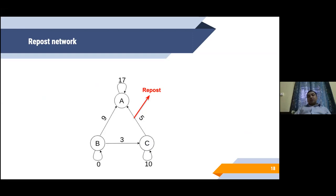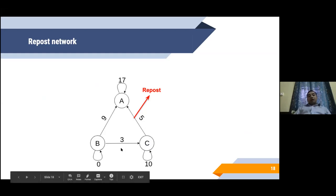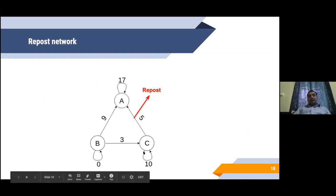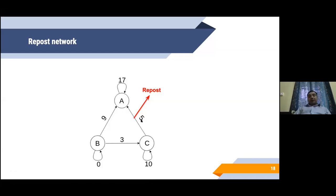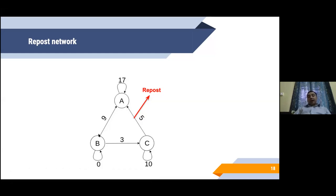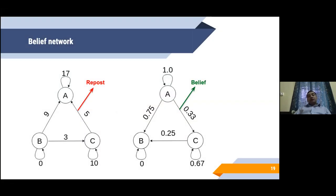From this we construct a repost network. What is a repost network? Let us assume we have a small set of users A, B, and C. Let's consider node C. Node C posts 10 posts of its own, that is denoted by this self loop, and it reposts 5 posts from user A. That is denoted by the directed edge. User A posts 17 posts of its own but does not repost anything from any of its neighbors. Whereas B does not post anything but only reposts 9 of the posts of A.